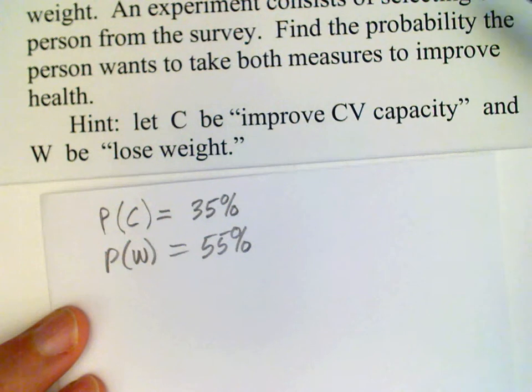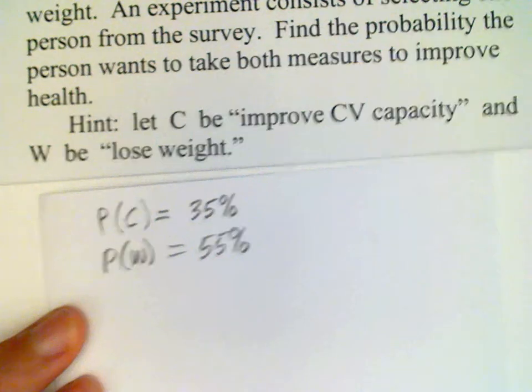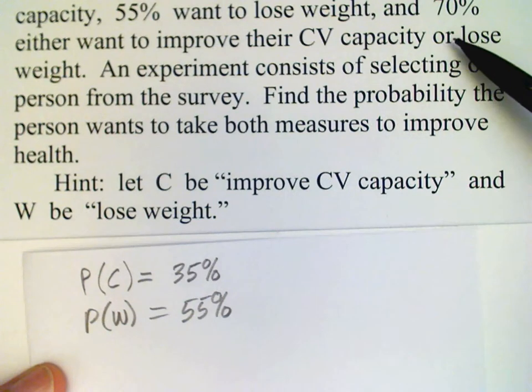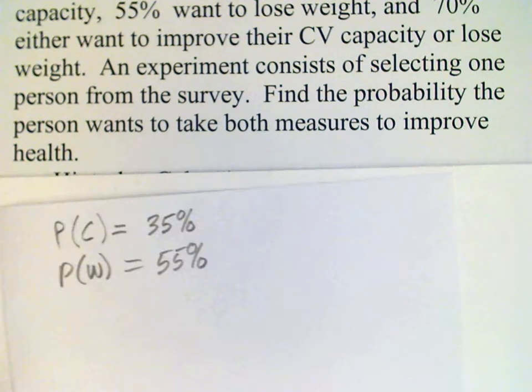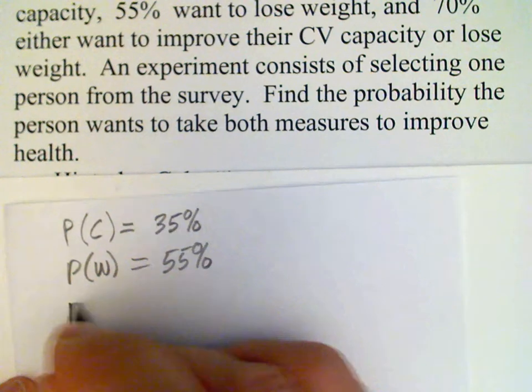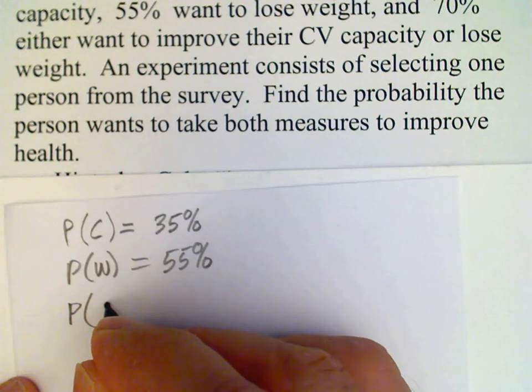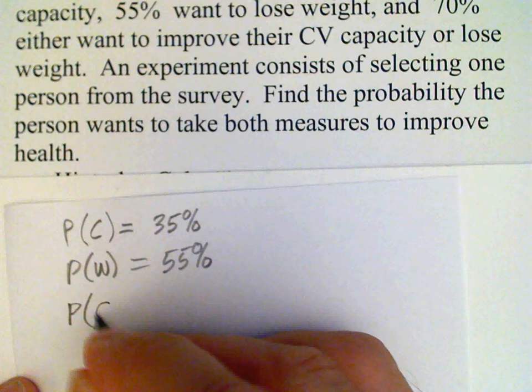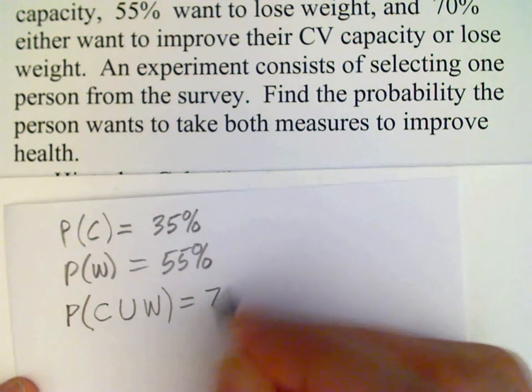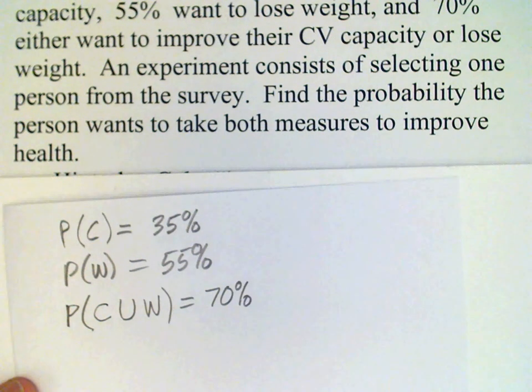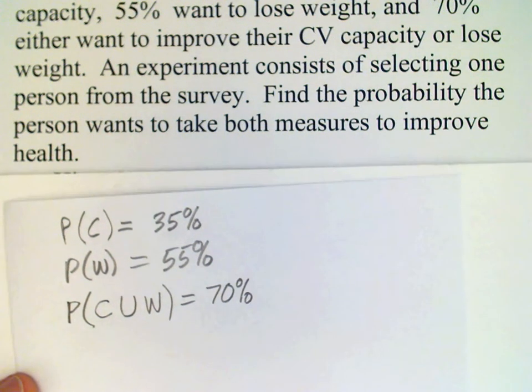We already agreed that this word 'or' here refers to the union of these two events, and so that gives us another probability, the probability of the union of these two events. C union W is 70%.